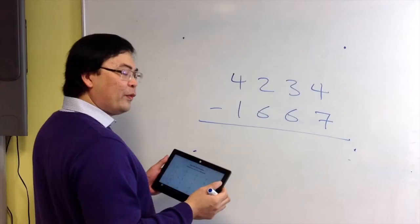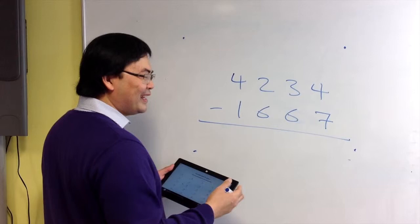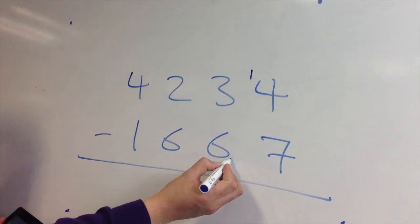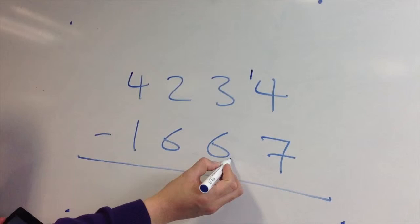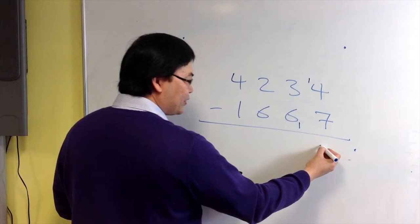So the way we handle this is 4 take away 7 we can't do, but instead of crossing out, we can use another technique. We can borrow 1 and pay back at the bottom. This becomes 14 take away 7, which is 7.